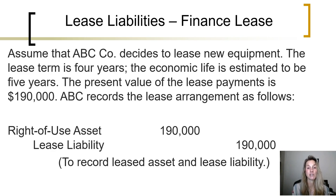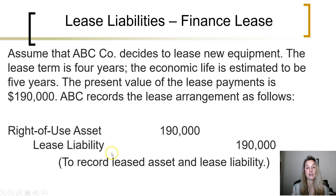Because it is considered to be a right of use asset, the company would record the asset by debiting it for $190,000, and it would record the long-term liability of $190,000. It's considered to be long-term because the life is five years.